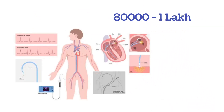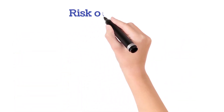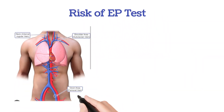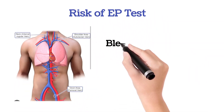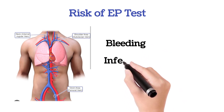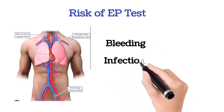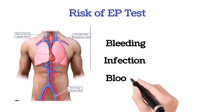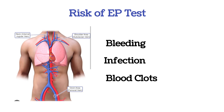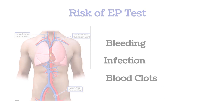Risks are very rare, but in very few cases there may be chances of bleeding or infection at the site where the catheter is placed, or there are chances of blood clots in the legs. This is all about the EP test.